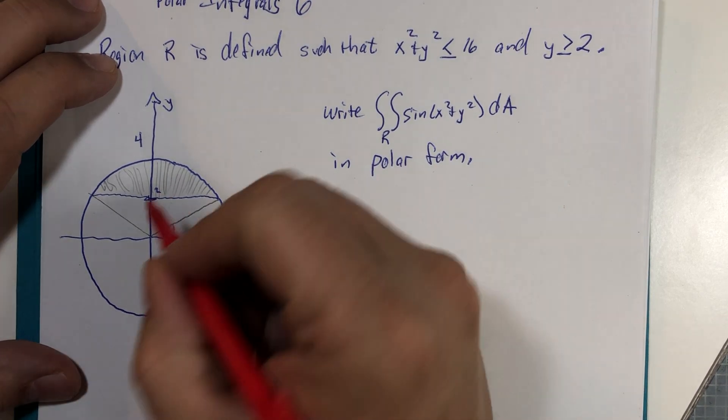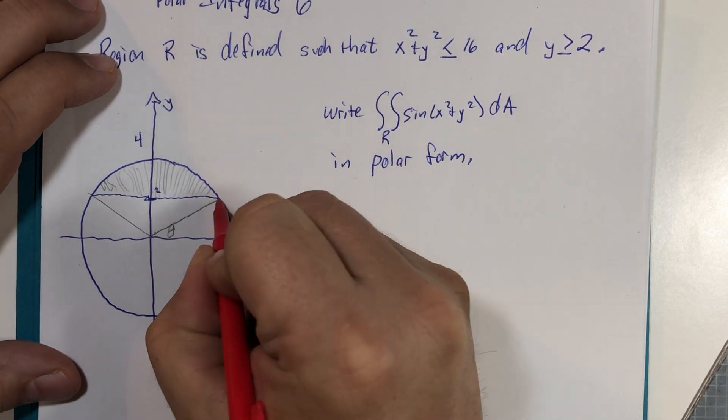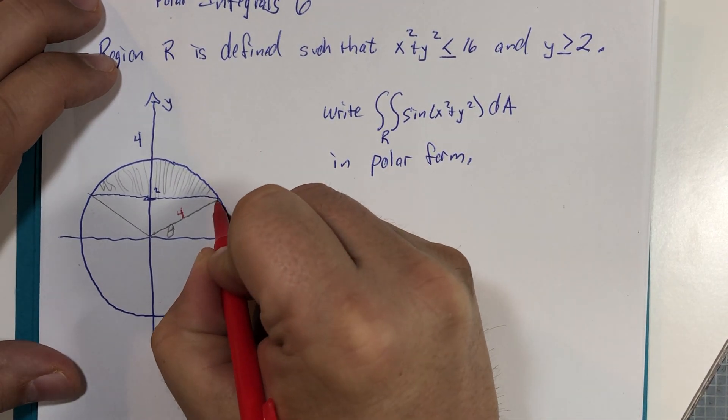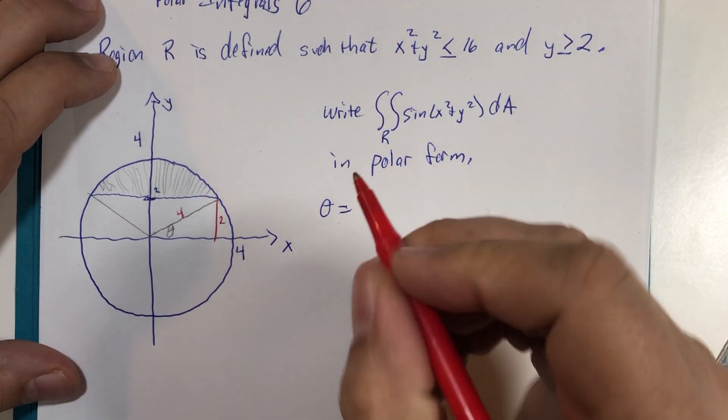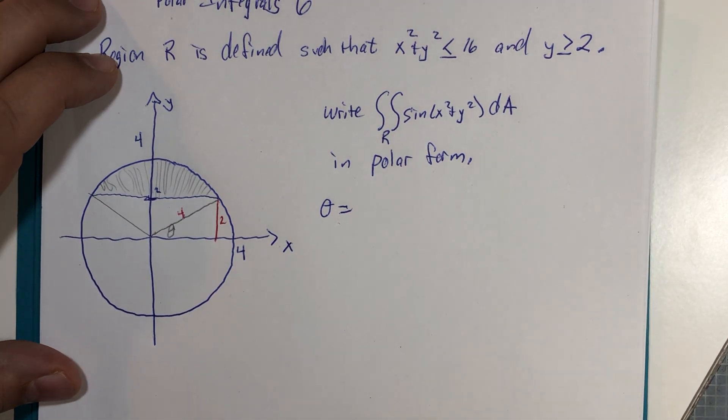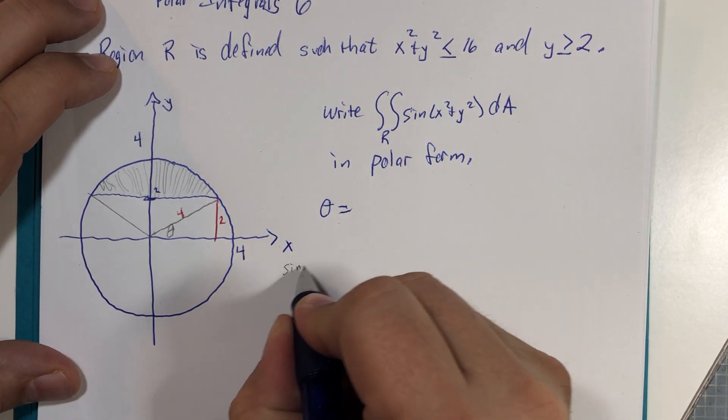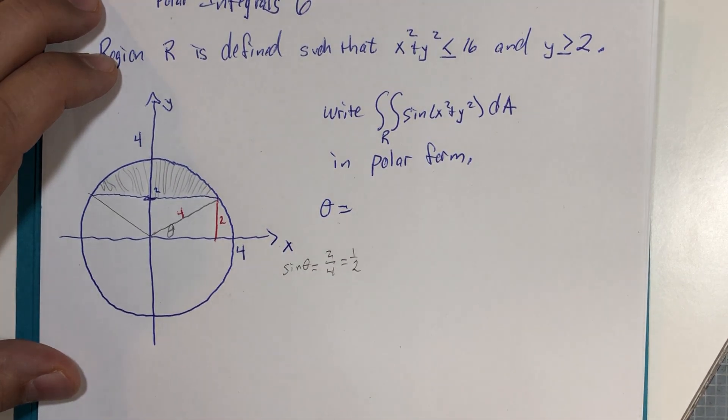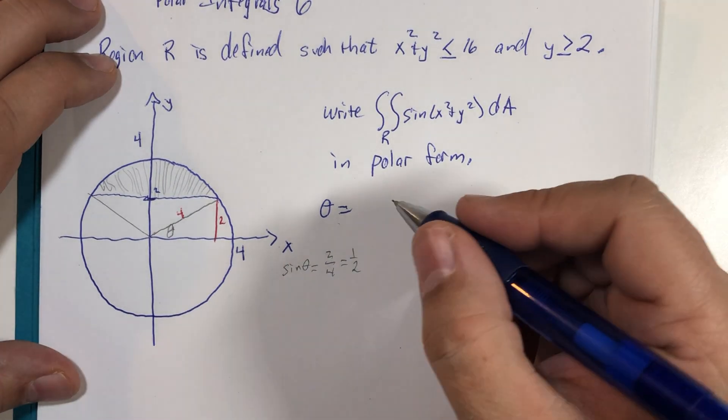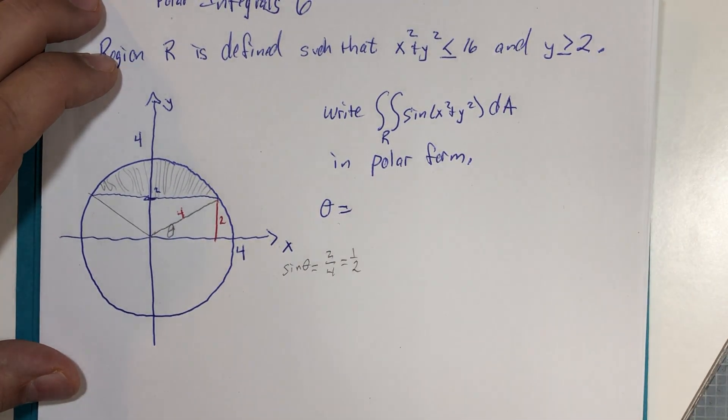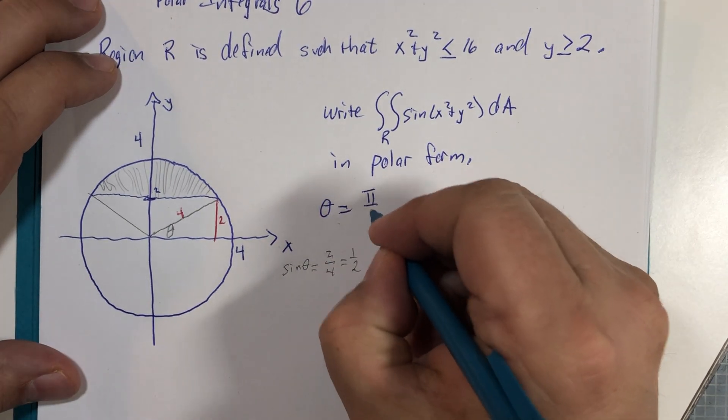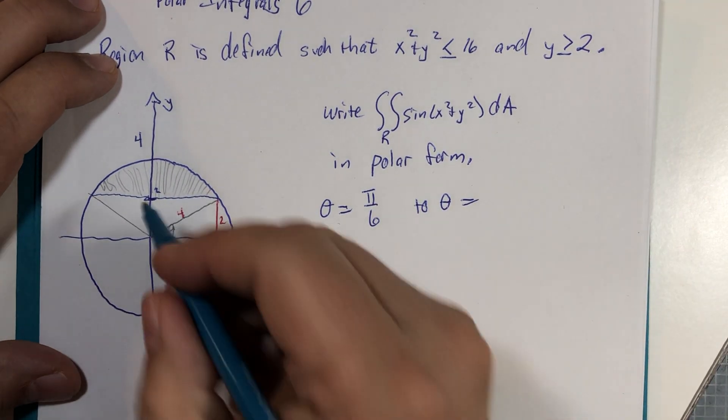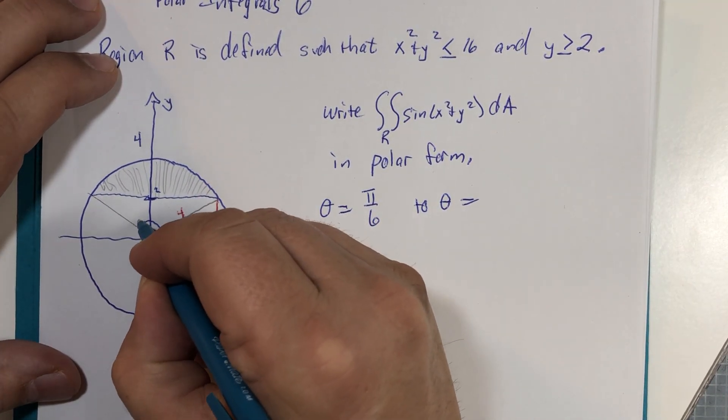The sine of theta is 2 over 4, which is 1/2. So therefore that makes my theta—well, that's right—pi over 6. That means this theta over here must be 5 pi over 6. So those are the theta boundaries for our region of integration.